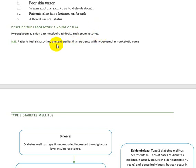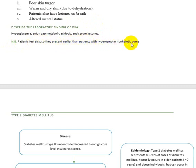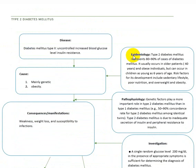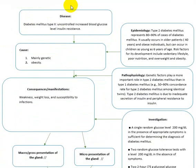On investigation you find hyperglycemia, elevated serum ketones. Patients with DKA feel sick and present earlier than patients with hyperosmolar non-ketotic coma.